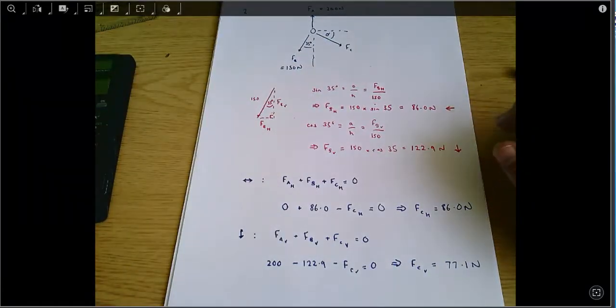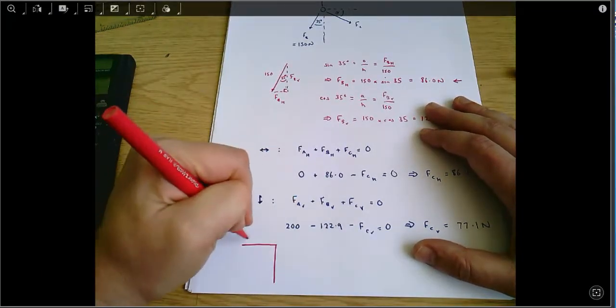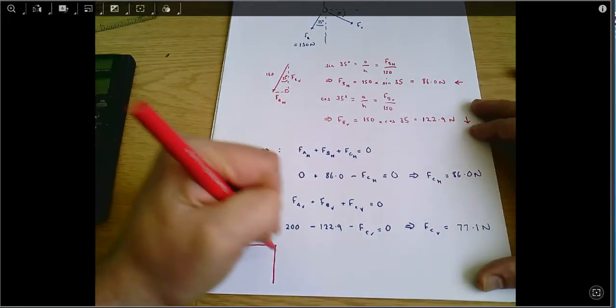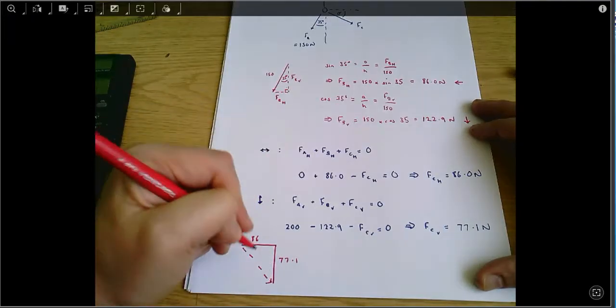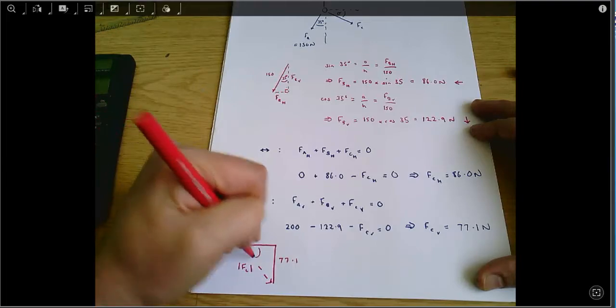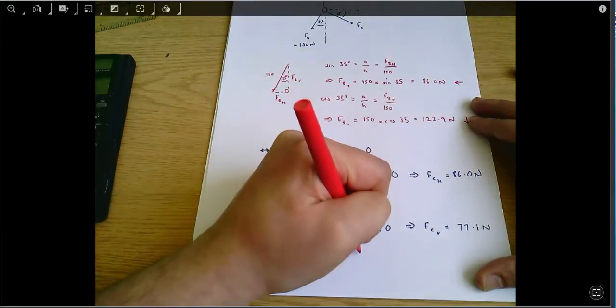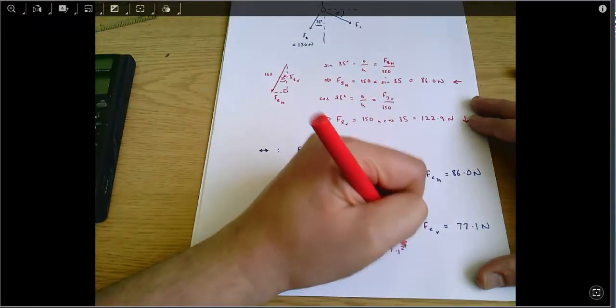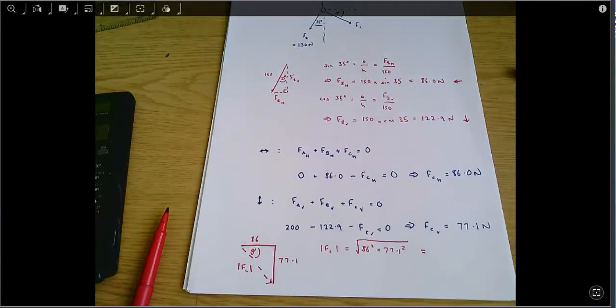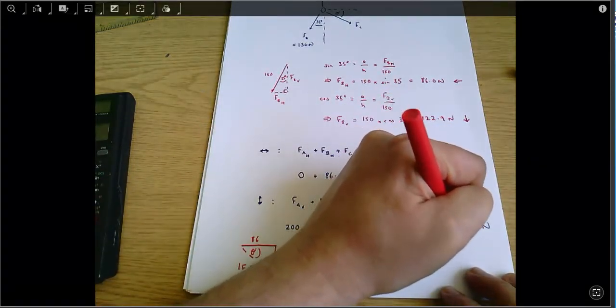So what we've got now is another triangle. This side here is the horizontal side. That's 86. That's 77.1. And now what we don't know is the magnitude of FC. That's that line there. And we don't know the angle theta. But we can calculate those. The magnitude of FC is, by Pythagoras, the square root of 86 squared plus 77.1 squared. And that equals 115.5 newtons.